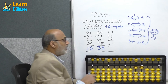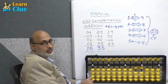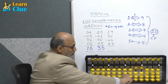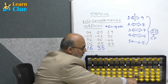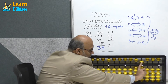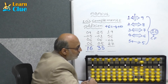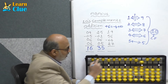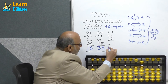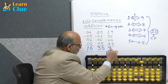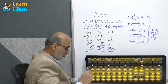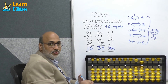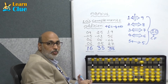Now add 27 — plus 20 plus 7. Tell me, what is the answer? 38 is the answer. Students, like this you have to do practice.